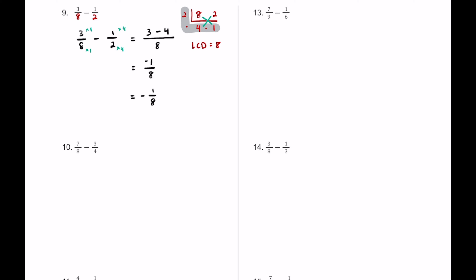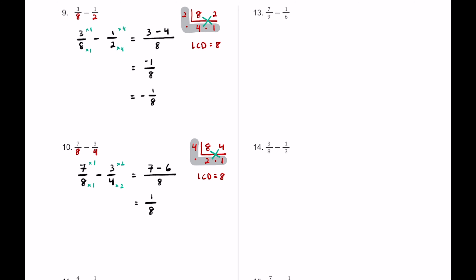For number ten we have seven-eighths take away three-fourths. Four goes into both: four times two is eight and four times one is four. Four times two is eight, eight times one is still eight — so the LCD is eight. Seven-eighths times one over one, three-fourths times two over two: seven times one is seven, three times two is six, so seven minus six equals one — giving one-eighth.